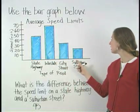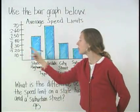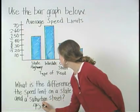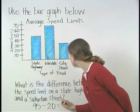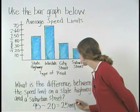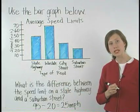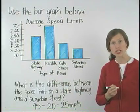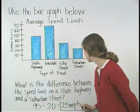The speed limit on a suburban street is 20 miles per hour. So we have 45 minus 20, which is 25 miles per hour. The difference between the speed limit on a state highway and a suburban street is 25 miles per hour.